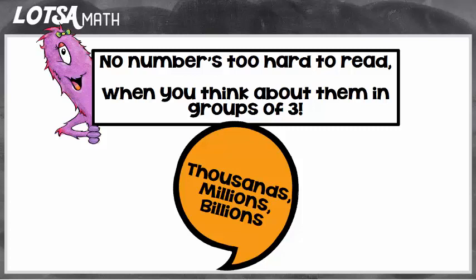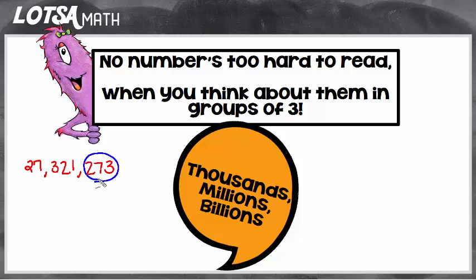Let me show you how knowing this rhyme can help you write a number. So let's think about a big number. This rhyme says no number's too hard to read when you think about them in groups of three. So instead of thinking about the whole number, let's think about them in groups of three. We'll think about this group of three, this group of three, and this isn't quite three — so we'll think about that as a group of two. When we look at this number, we know that's 273, this number is 321, and this number is 27.